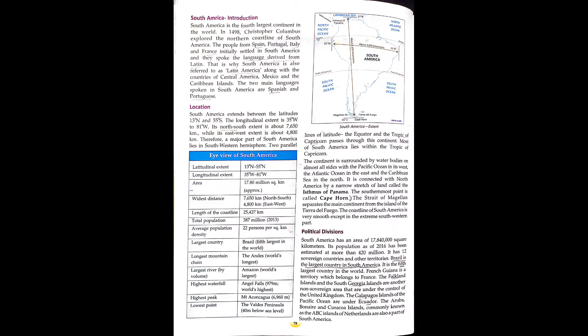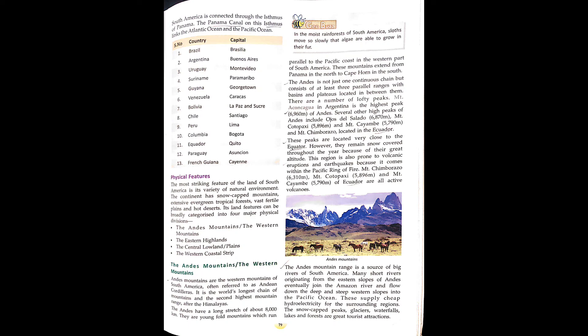The Galapagos Islands of the Pacific Ocean are under Ecuador. The Aruba, Bonaire and Curaçao Islands — commonly known as the ABC Islands — belong to the Netherlands and are also part of South America. South America is connected to North America through the Isthmus of Panama. The Panama Canal links the Atlantic Ocean and the Pacific Ocean.